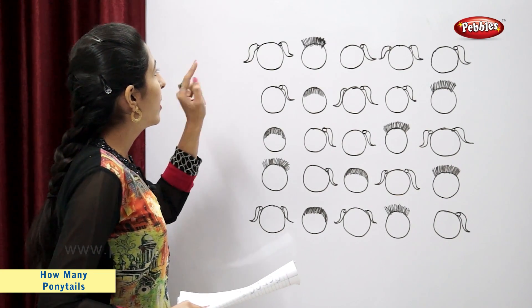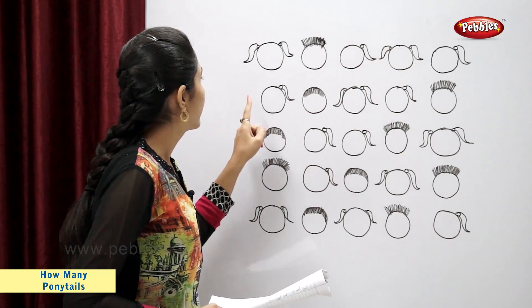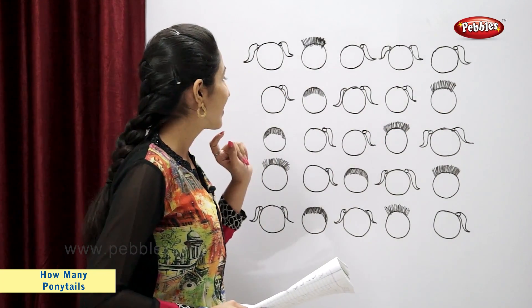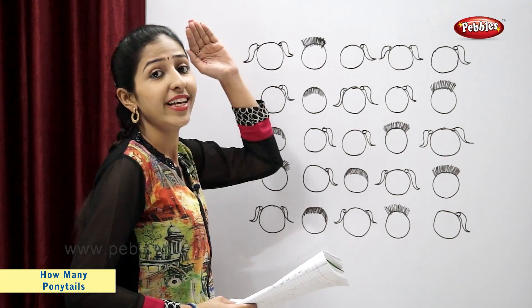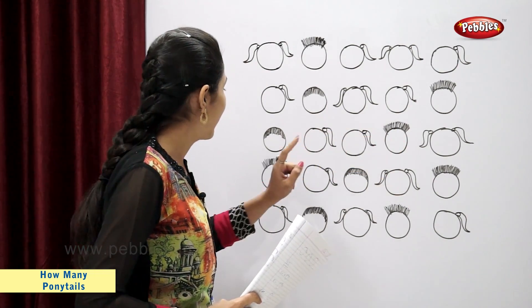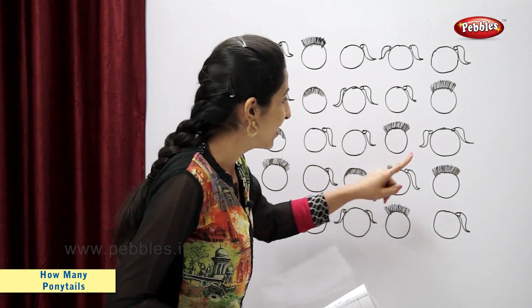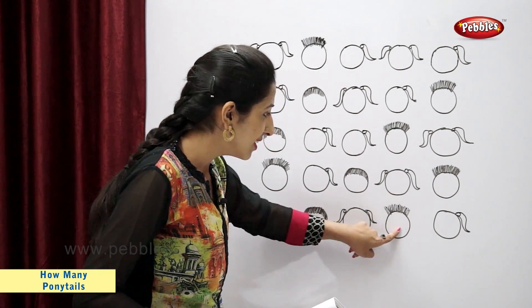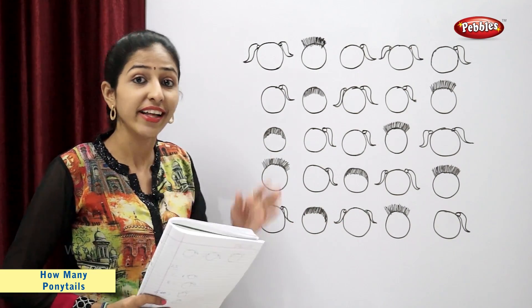Let's count. One, two — with their hair up — three, four, five, and six. So there are six children with their hair up.